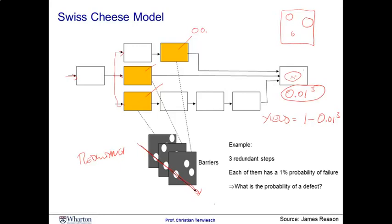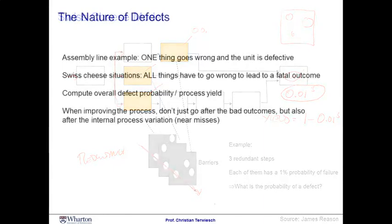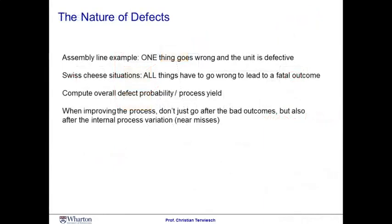So you notice how the process flow diagram and your understanding of what's happening in the process is driving how the individual defect probabilities get aggregated to an overall defect probability and to the process yield. In this session, we have discussed two examples of defects. In the assembly line example, we saw a situation in which a defect anywhere in the process would lead to a defective unit of flow at the end.